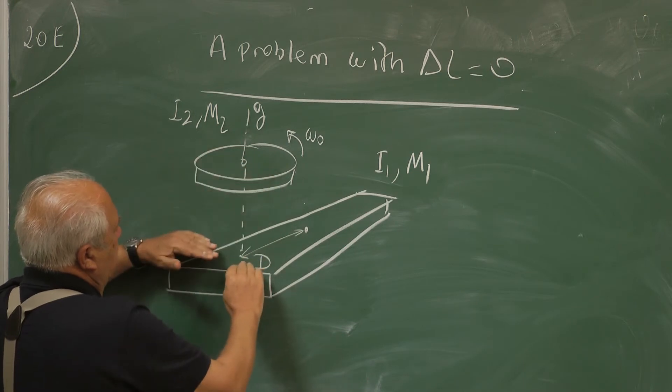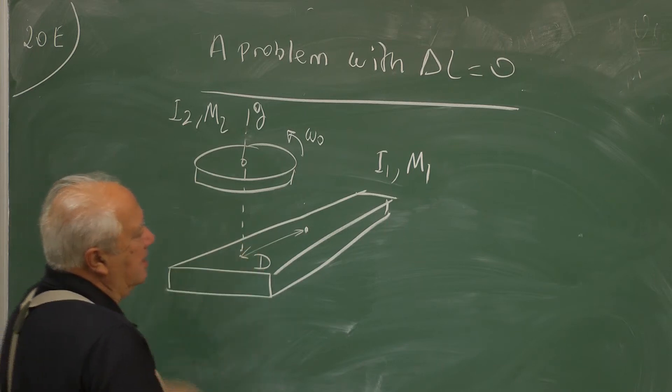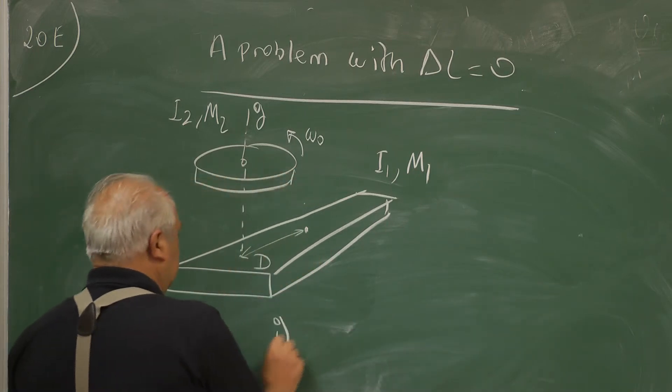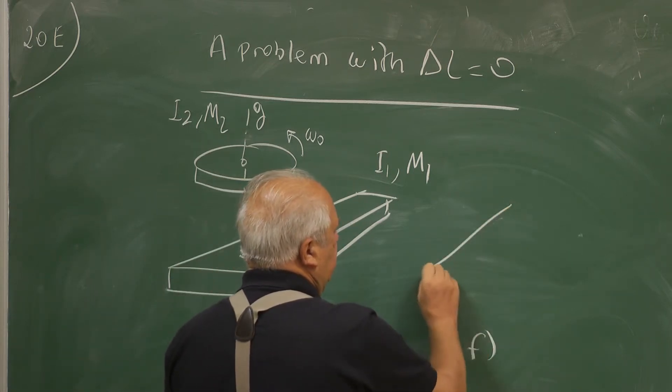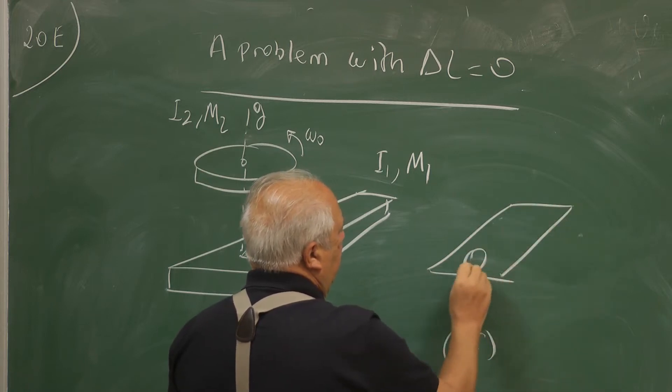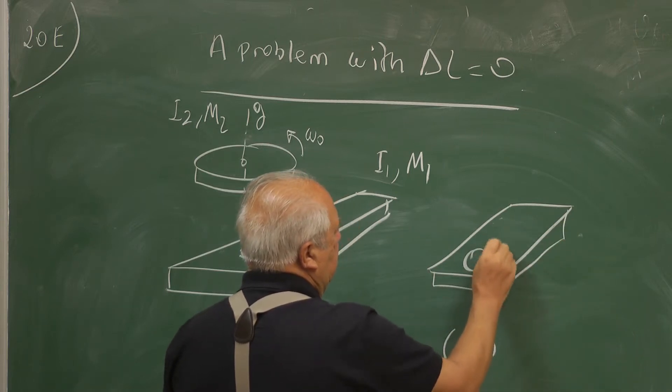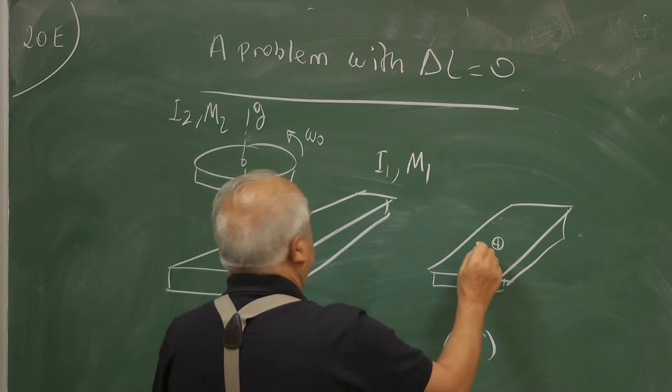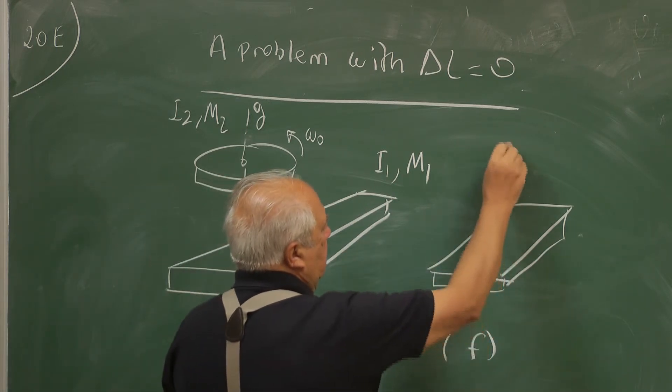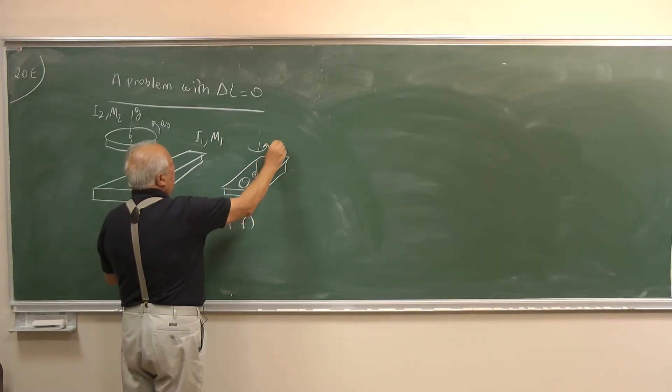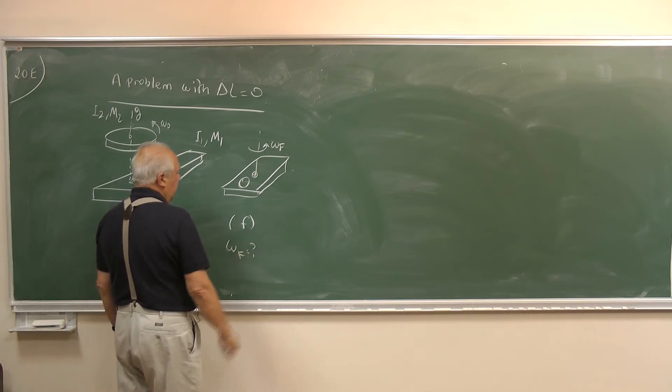You drop it onto this plank and surfaces are sticky at the end. This is the initial. Finally, let me make a small picture. This stops with respect to the plank and it will rotate. This is a horizontal surface. This will rotate with final omega f. The question is find omega f.